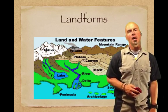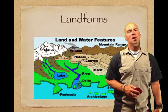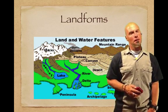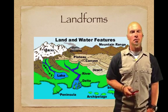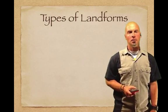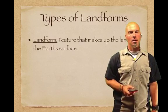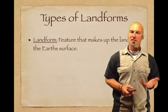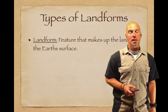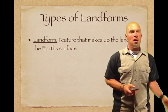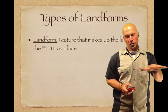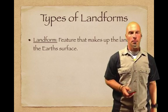Hey scientists, today we are going to be talking about landforms — land and water features. A landform basically is a feature that makes up the land at the Earth's surface. So basically everything you can see on the surface of the Earth is a landform.